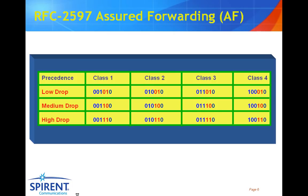If we take a look at these different types of classes, you can see on this diagram we have class 1 through to class 4. Class 1 with a low drop probability, bit pattern 0,0,1,0,1,0, gives us the highest class of service, while class 4 with a high drop probability, bit pattern 1,0,0,1,1,0, would be the lowest class of service. With 12 different types of service defined by RFC 2597, we have more than enough to cover voice over IP, streaming video, web browsing, file transfer, and so on. Assured forwarding today is perhaps one of the most popular mechanisms used within the corporate environment.